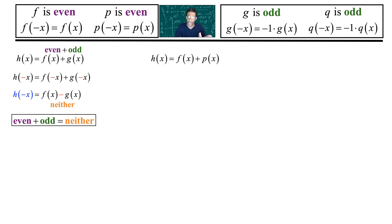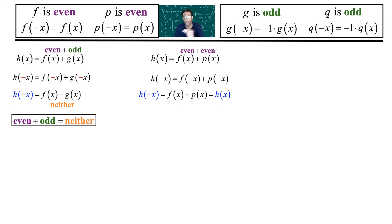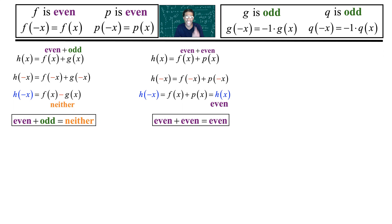What if you add two even functions? You put in negative x to replace x, and what happens is that the original functions come back out. f of negative x is f of x; p of negative x is p of x. So you're back to the original function — you put in negative x, and what came out is the original function, which makes this function even.